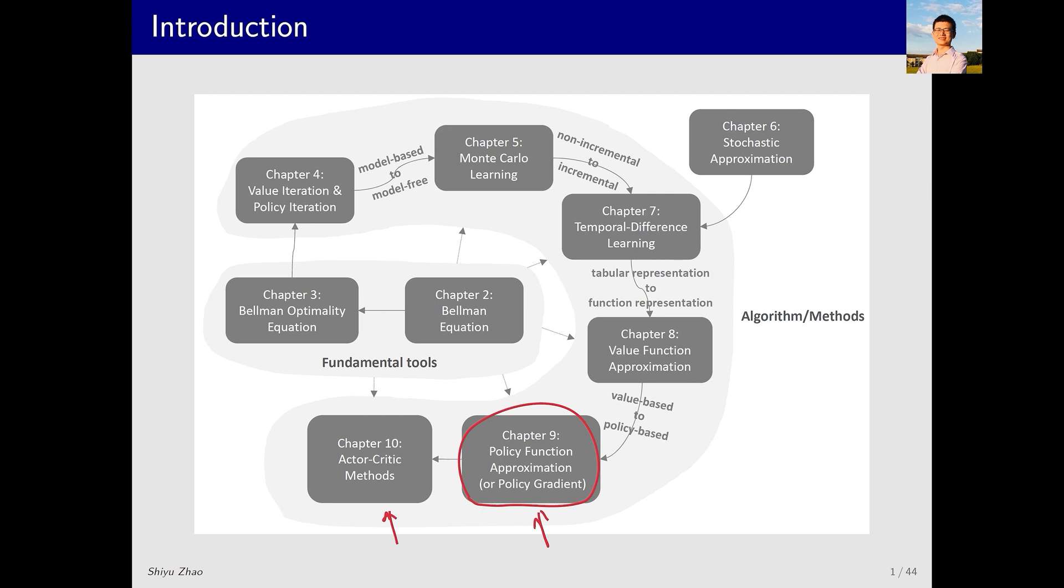What is the connection between this lecture and the last one? In the previous lecture we introduced value function methods. Previously we represented values using tables, now we can represent them using functions. This lecture is based on a similar idea: previously we used tables to represent policies, now we can use functions to represent policies. There is a leap from the last lecture to this one. All the methods we have discussed so far are known as value-based methods. In contrast, the methods introduced today in this lecture, as well as in the next lecture, are policy-based methods. A value-based method aims to optimize a metric that is a function of values, whereas a policy-based method directly optimizes a metric that is a function of policies. By the way, the actor-critic method that will be introduced next time combines the policy gradient method with the value function method.